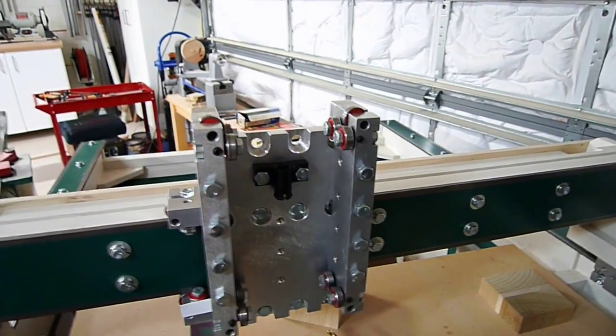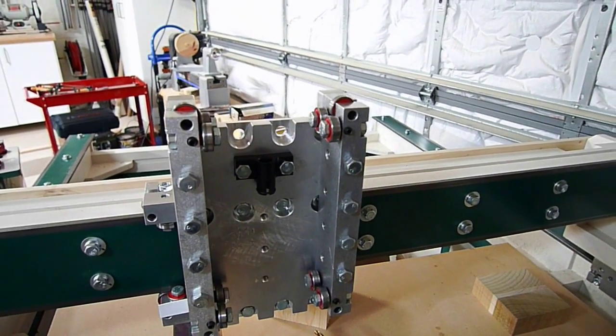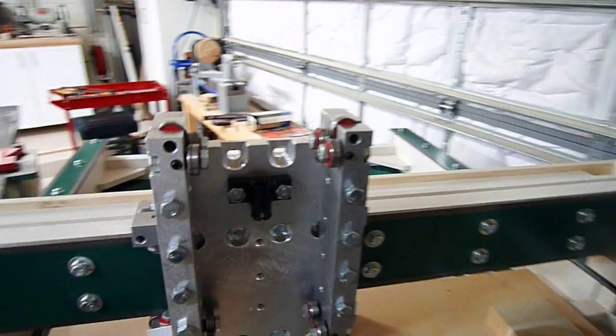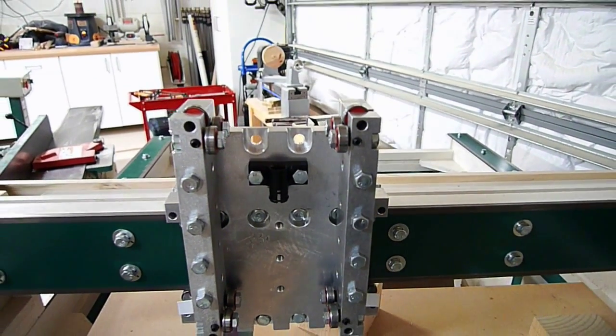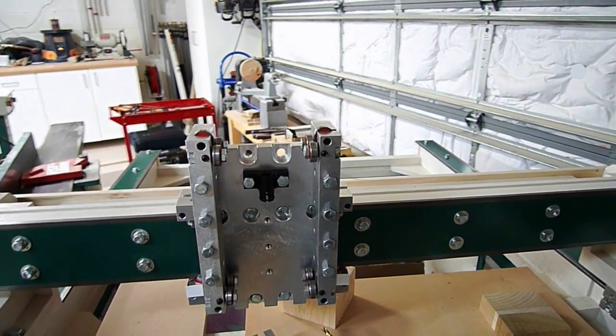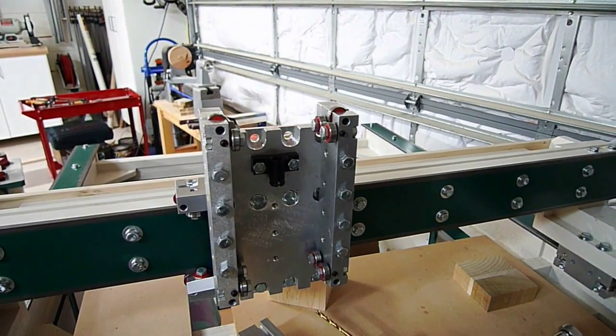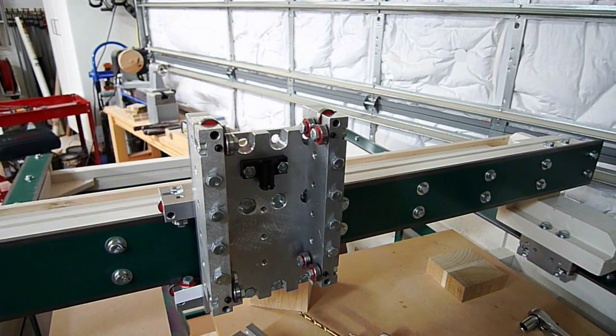This right here is the anti-backlash nut that is used to control the lead screw. That's where the lead screw spins in and out of that, allowing it to raise up and down while not introducing slop into the system. So that's it for now. I'll put the rest of it together and then get the video again.